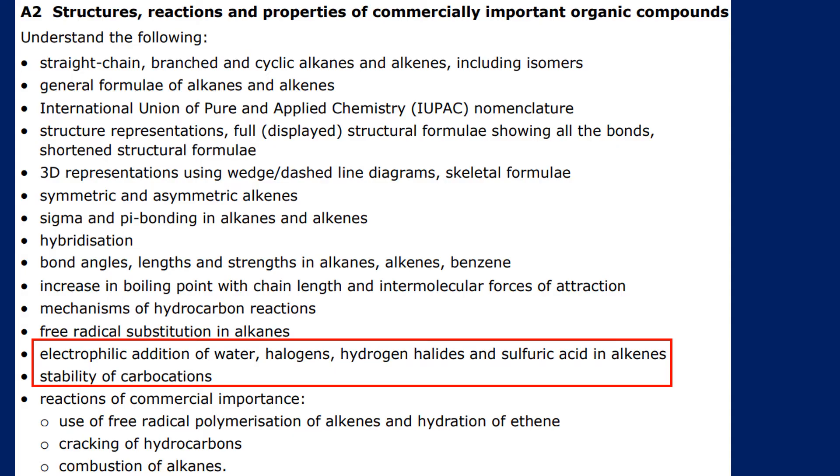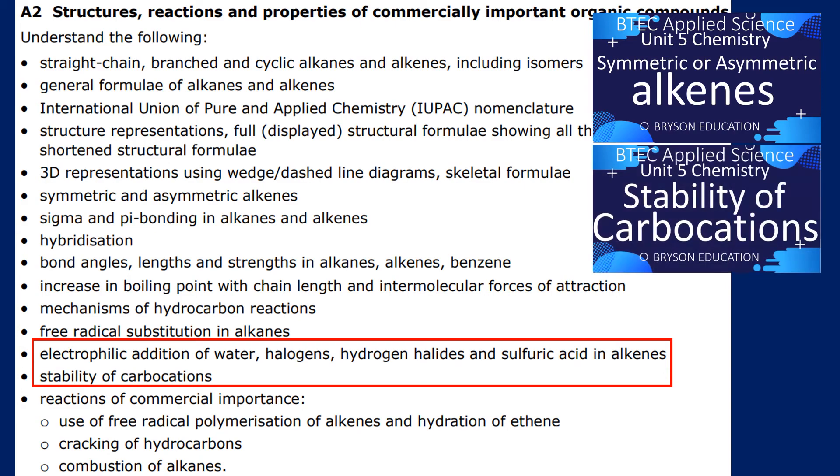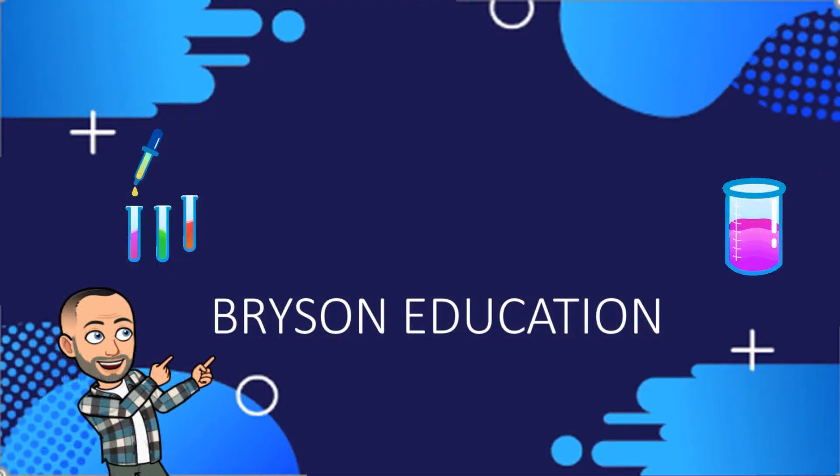We need some prior knowledge on recognizing symmetric and asymmetric alkenes and also the stability of carbocations to allow us to look at major and minor products. I will put links for those two videos in the description in case you haven't seen those first.